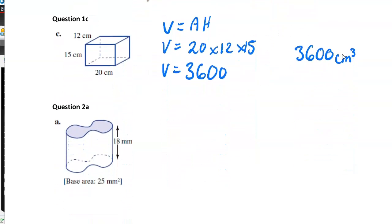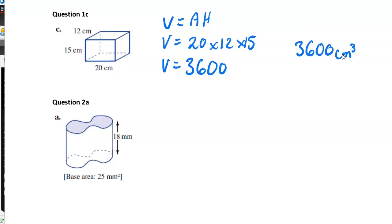This one is a prism. Why is it a prism? Well, this shape at the top is consistent throughout the entire height of the prism. You get told here that the base is 25 square millimeters - that's the area of that base. So volume equals area times h, so volume equals 25 times 18, which is 450 square millimeters.